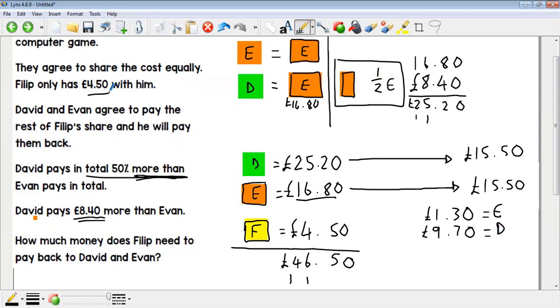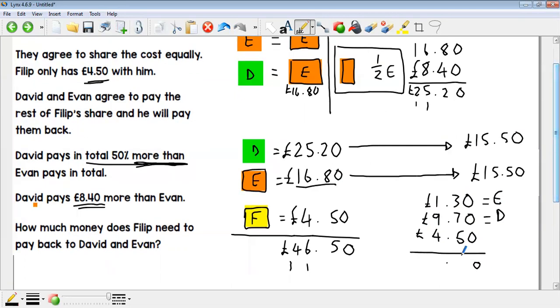And also to double check, if I put what Philip actually paid himself onto the bottom and add them up, you would get that £15.50 that he should pay. Hope that helps.